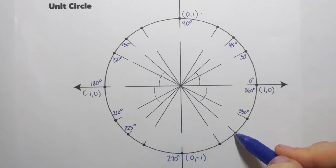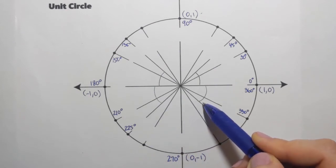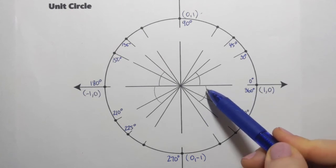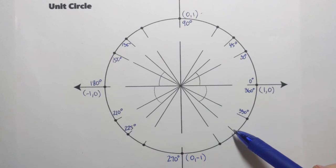And in quadrant four, that's the terminal side of the angle, right? So that's how far it sweeps. It stops here. But then to calculate it, I'll start with 360 and then I take away 45. So 360 minus 45, that gives me 315 degrees.